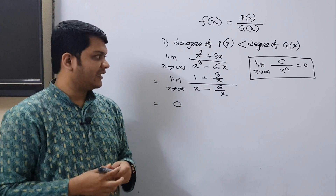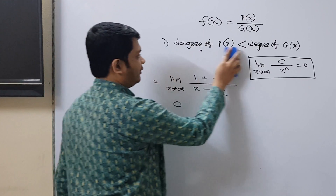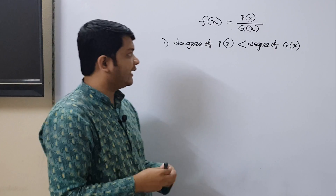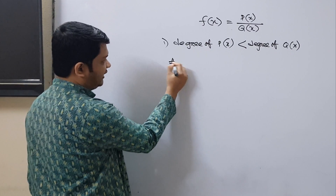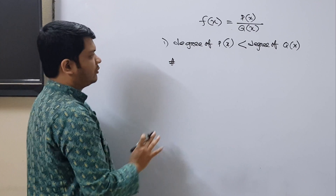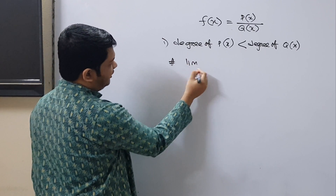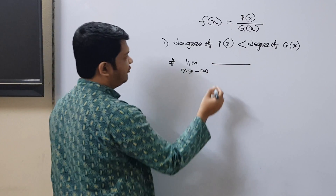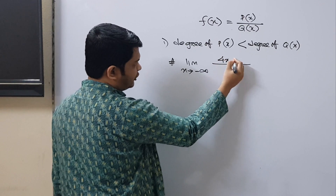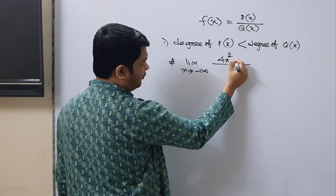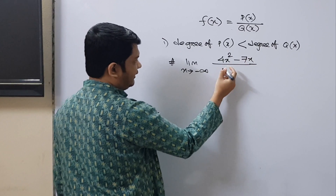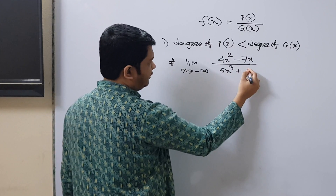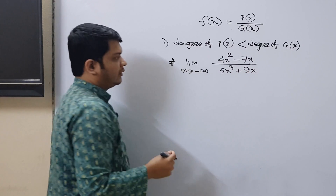Very easy, isn't it? Let's solve another problem. This time we have the limit as x tends to negative infinity of (4x² - 7x) divided by (5x³ + 9x).